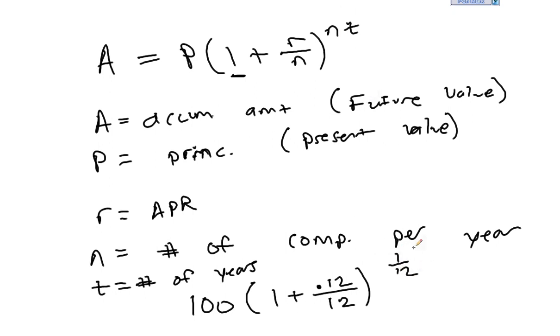t would actually be 1/12th of a year. And n is the number of times interest is paid each year. So if we did 12 compoundings per year times 1/12th of a year, that would really just mean take 100 times 1.01 and raise it to the first power. So in that case, we'd have $101.